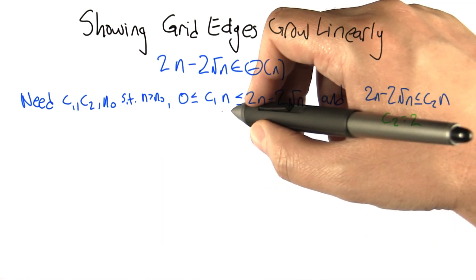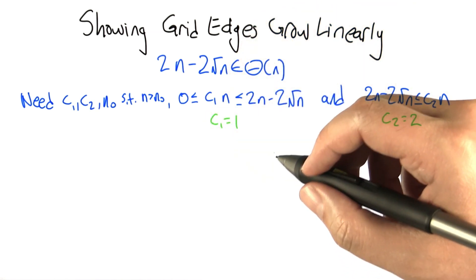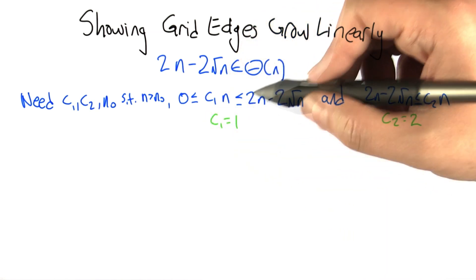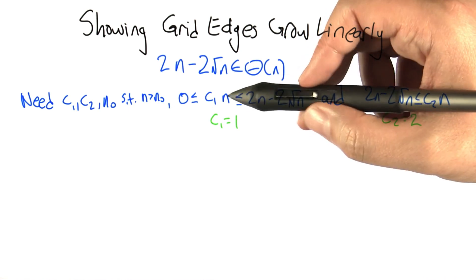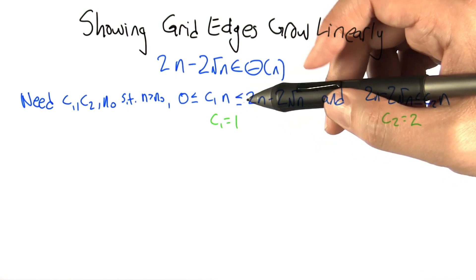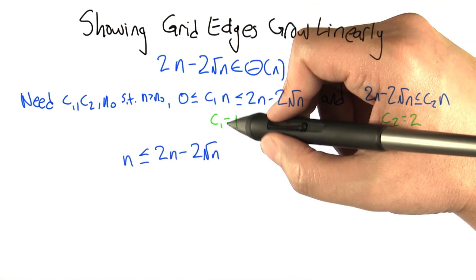What about c1? Well, let's take c1 to be 1. Intuitively, the idea being this function is growing like 2n minus something smaller than that, so n should be underneath of that. But let's just make sure if c1 is equal to 1, then we need n to be less than or equal to this expression.